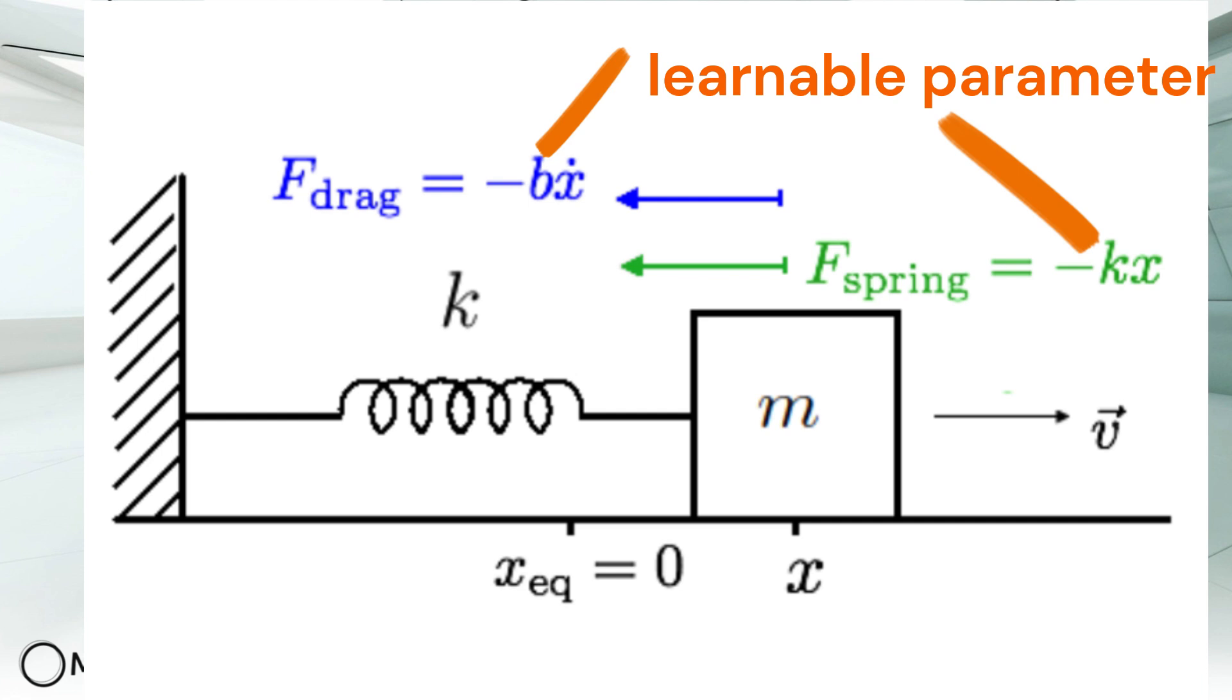We will take one learnable parameter and we will apply inverse PINNs on it. So we will learn how to solve a learnable parameter in an ODE, which is also going to be a damped harmonic oscillator using inverse PINNs. This is going to be our second part of this course.